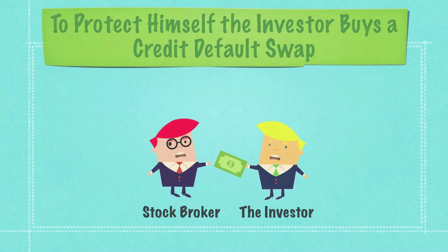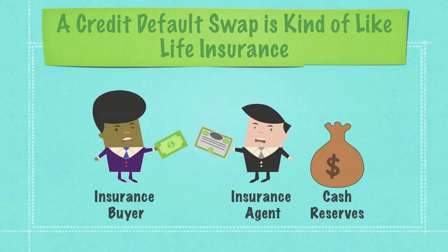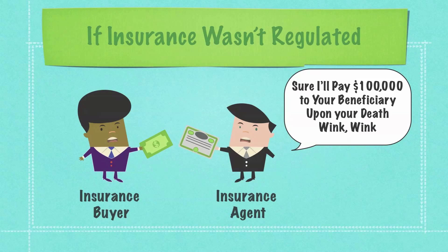The investor, to hedge against the risk that the homeowner defaults, can go to a stockbroker and buy what's called a credit default swap — a derivative. By paying the stockbroker a certain amount of money, if the homeowner defaults, the stockbroker promises to pay the investor. A credit default swap is kind of like life insurance. The major difference between a CDS contract and a life insurance contract is that the life and health insurance markets are regulated — they must have cash reserves on hand to pay out if purchasers should pass away. The CDS market is not regulated — there is no pool of money.